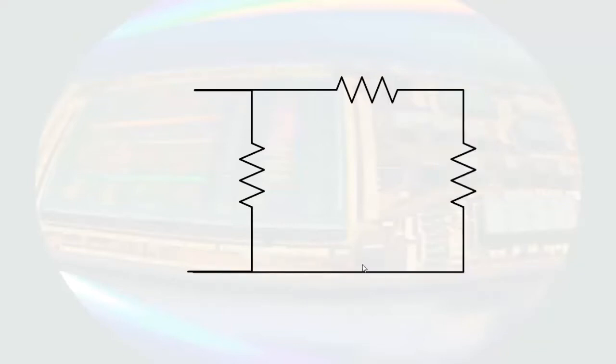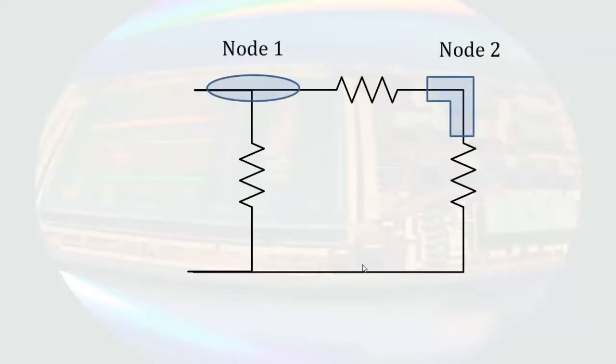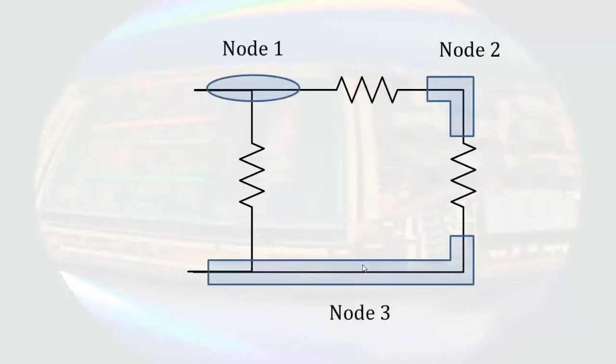To look at a negative example, here we see three resistors connected to each other. Each of the resistors on the right are in a position that we called parallel to the resistor on the left in the previous examples, and two of those resistors also appear to be side-by-side. But when we mark the nodes, we see there are three separate nodes in this circuit.